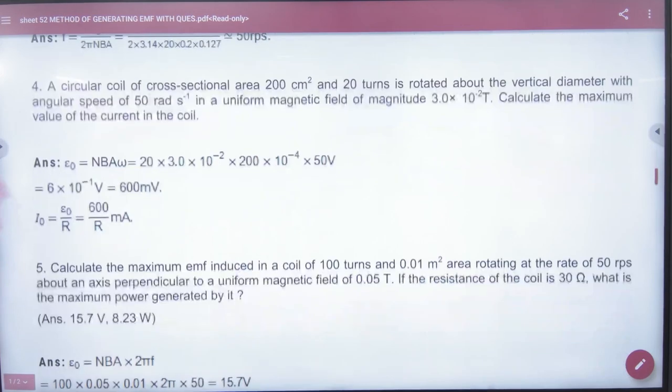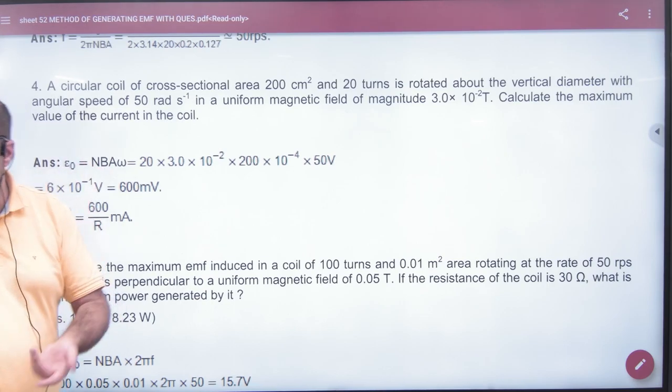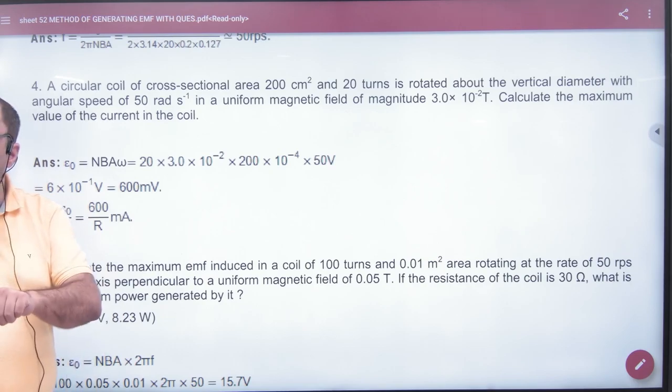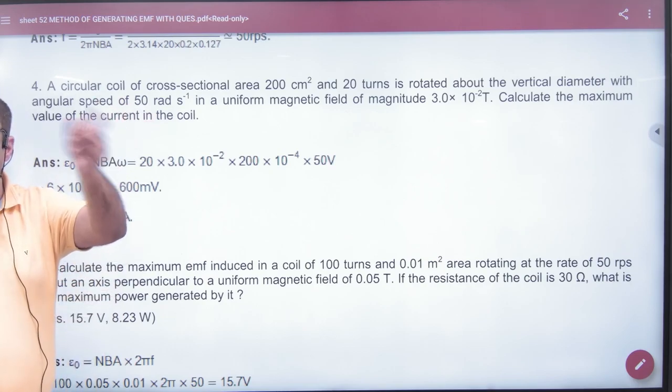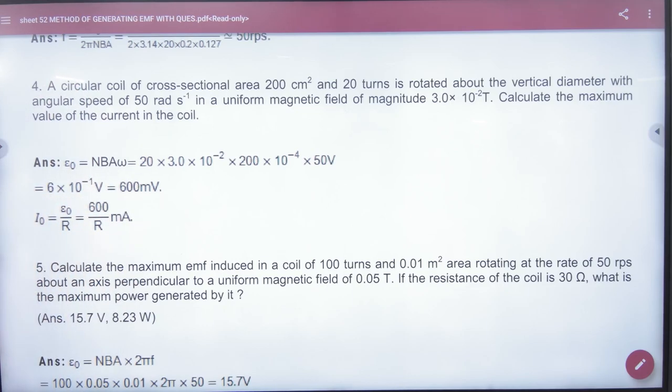Fourth question: Circular coil of cross-section area 200 cm² and 20 turns is rotated about vertical diameter with angular speed of 50 radians per second in a uniform magnetic field given. Calculate maximum value of current in the circuit. What do you do? First, maximum EMF = NBA omega. So maximum current = maximum EMF by resistance. Clear.